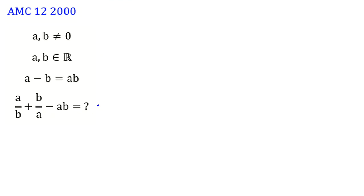For calculating this part, if we use common denominator, it will be AB. Here, A squared plus B squared minus AB times AB. A squared, B squared.